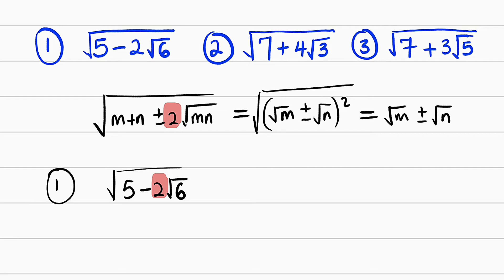So we have no problem with that one. Under the root, we have m multiplied by n, and here we have 6. We have m plus n, and here we have 5. This implies that we have to think of two numbers which, when multiplied together, we get 6, and when added together, we get 5.